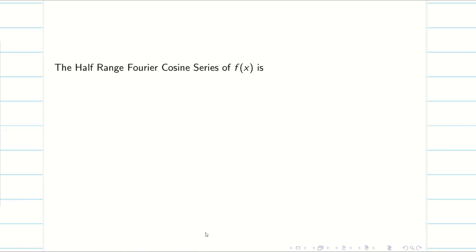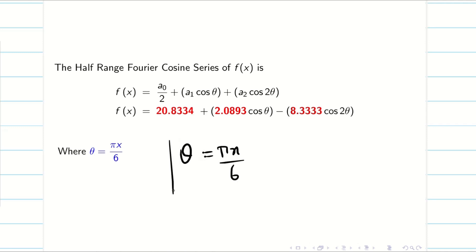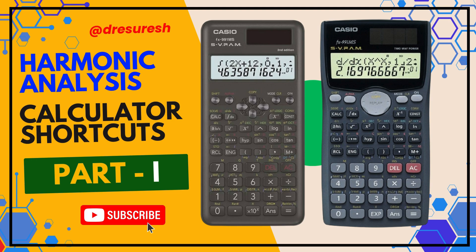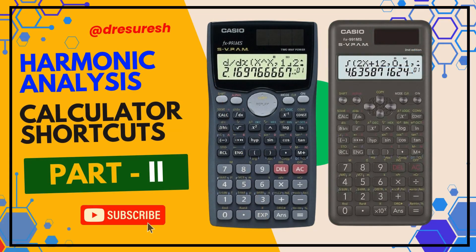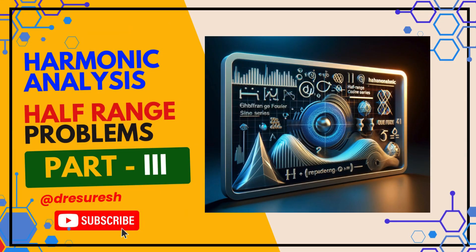Now, let us write the half-range Fourier cosine series. The half-range Fourier cosine series for the function f of x is simply a0 by 2, a1 cos theta, a2 cos 2 theta. We know the values, just substitute it and then mention where theta equal to pi x by 6. This is very very important. Hope you understand. Thanks for watching. Subscribe to our channel and share to your friends. See you in the next video. Bye-bye.